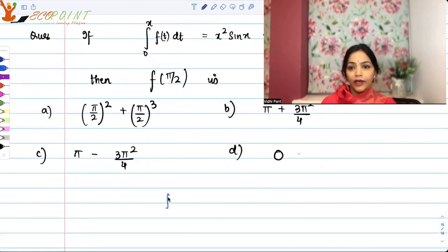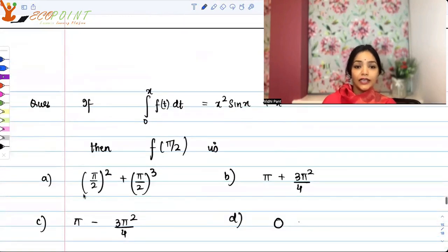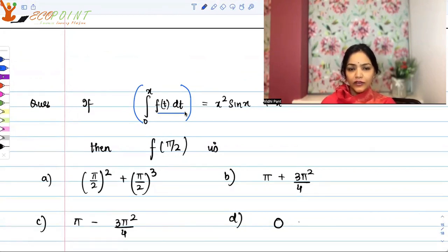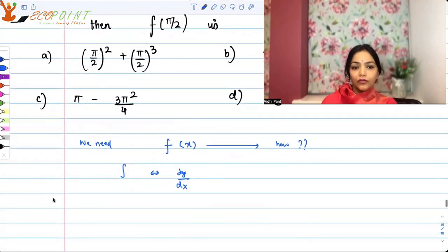I need f pi by 2. So we need fx. How? Do you remember? I've discussed this before. Integral and derivative and dy by dx. They are inverse of each other or entire of each other. So if I differentiate an integral, I should be getting back the function itself. If I'm differentiating integral of some function, then because derivative and integral, they're entire of each other, recall Leibniz rule. The fundamental theorem of calculus or the Leibniz rule.